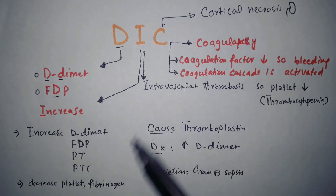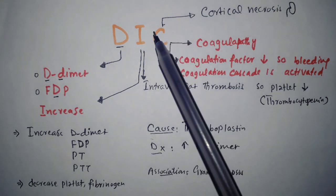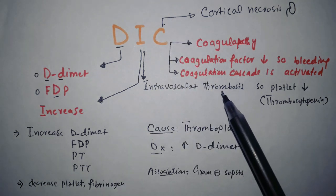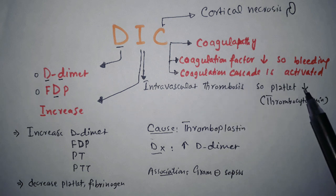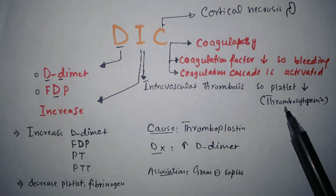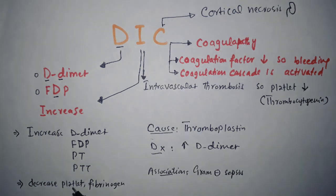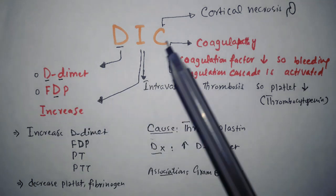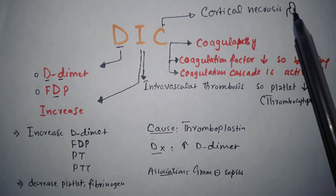If fibrinogen degradation product is increased, it means fibrinogen is going to decrease. So in DIC, fibrinogen decreases. I is for intravascular thrombosis — if there is intravascular thrombosis, platelets decrease, which is called thrombocytopenia. So in DIC, platelets are decreased and fibrinogen is decreased, but D-dimer and FDP are increased.